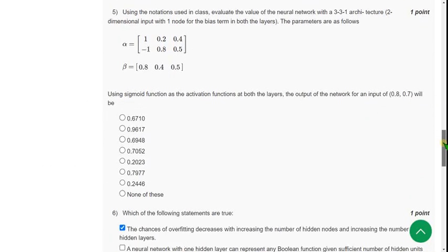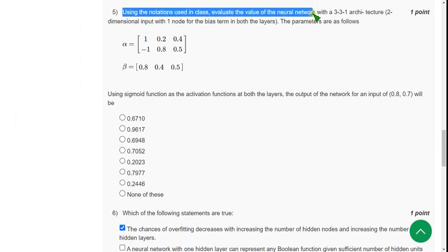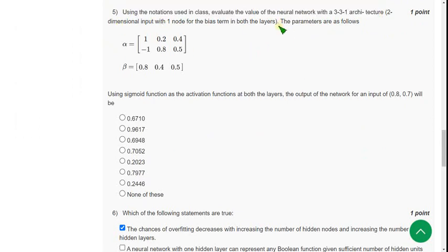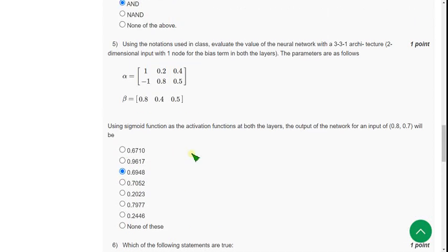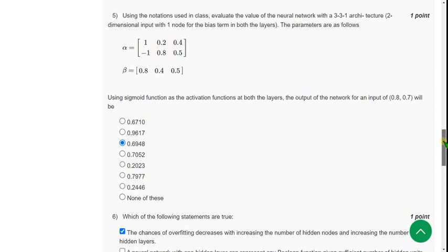Moving on to the fifth question, using the notations used in the class, evaluate the value of neural networks with a 3-3-1 architecture. The parameters are as follows - they have given alpha and beta matrices. For fifth question, the probable solution is 0.6948, that is third option. If there are any changes and if I get the updated solution, I will mention in the comment section. If any of you guys know the exact solution for these questions, please inform me in the comment section.